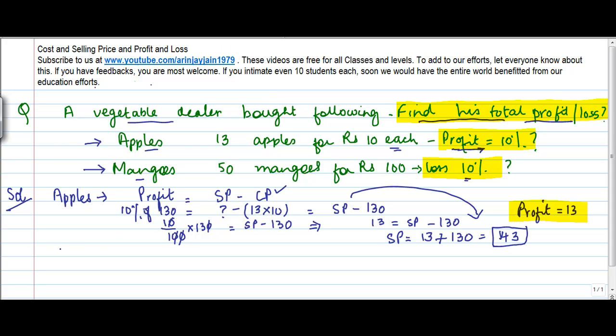Right, let's move on to the case of mangoes. Let me use a different color for this. Now mangoes - 50 mangoes I bought for rupees 100, so my cost price is equal to 100.